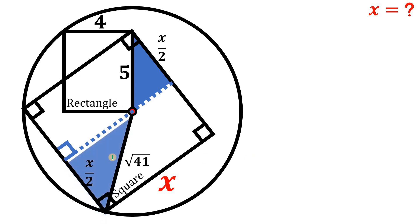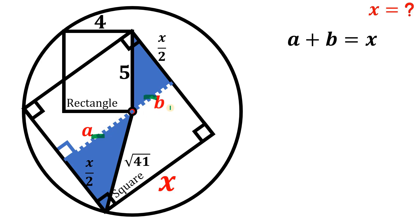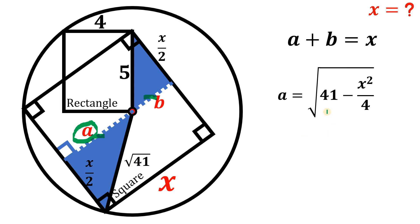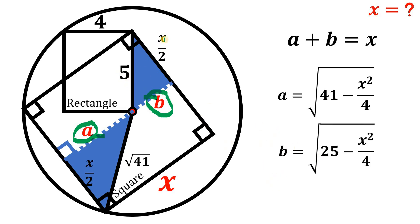So we can now use this right triangle to answer the question. We have two right triangles. If we let this piece equal a and this piece equal b, we can say that a plus b equals x. Using the Pythagorean theorem to solve for a: a equals the square root of 41 minus x squared over 4. And solving for b: b equals the square root of 25 minus x squared over 4.